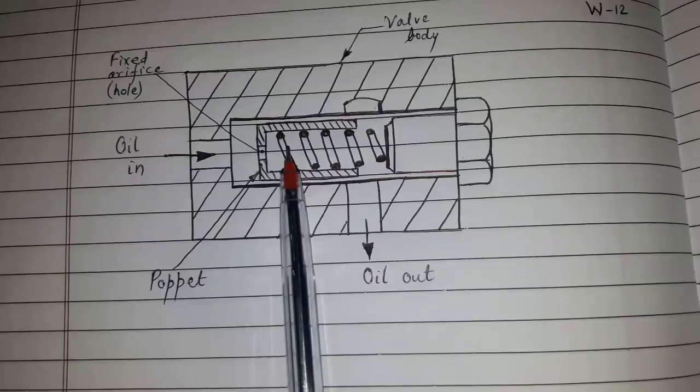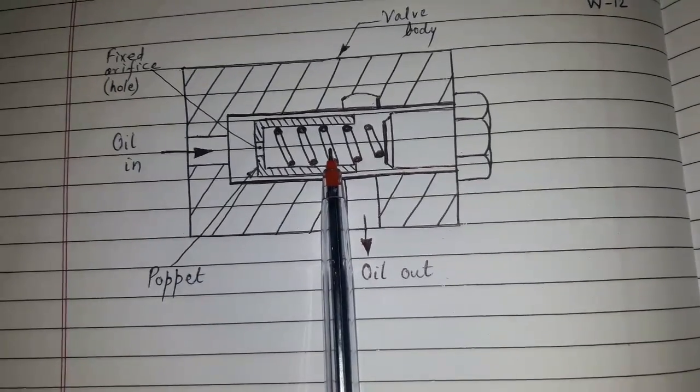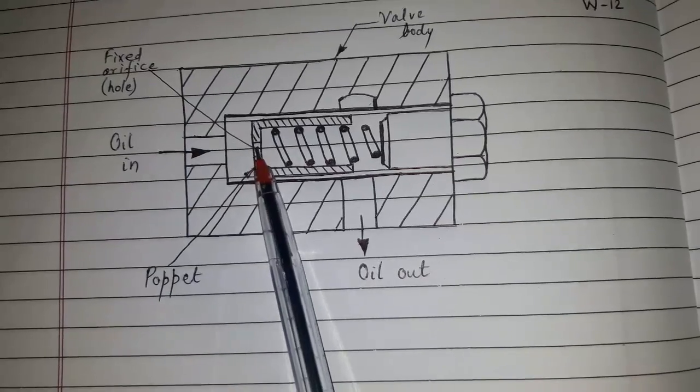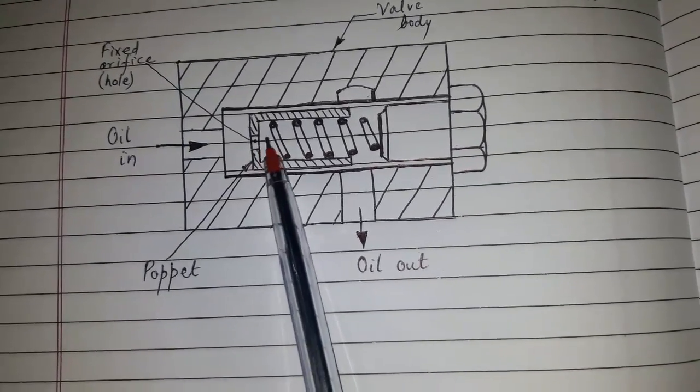Then the movement of the poppet towards the right will stop. Now the flow of oil through the orifice will start.